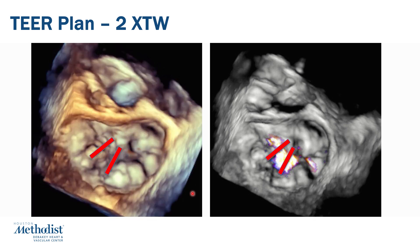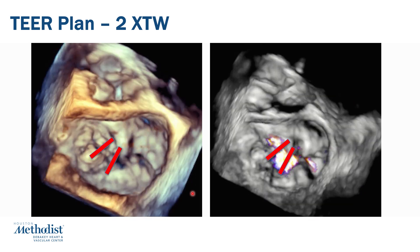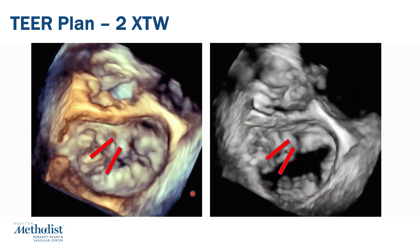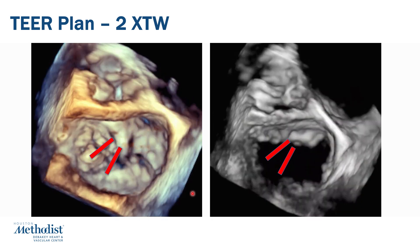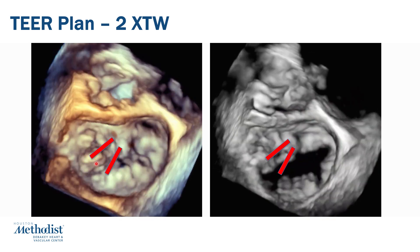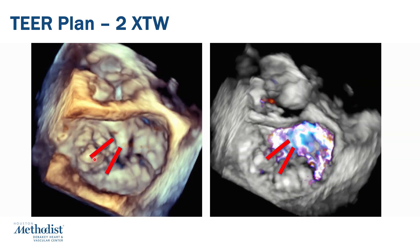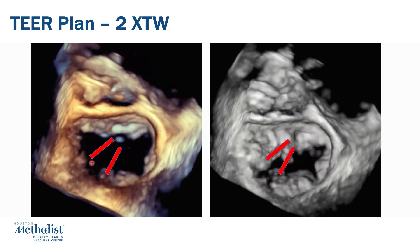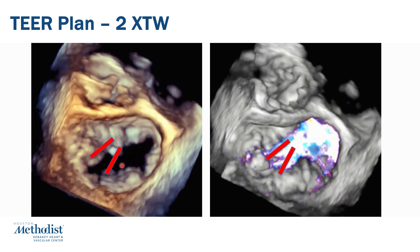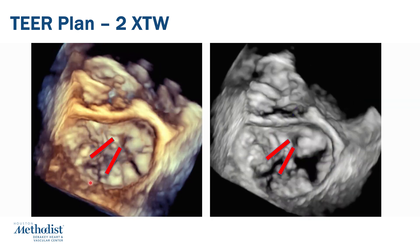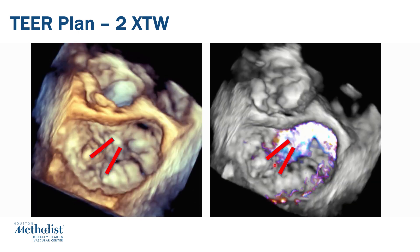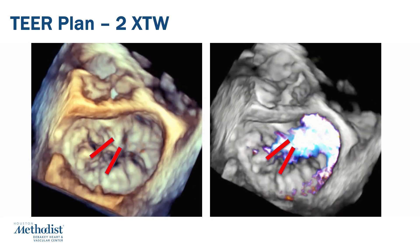This patient was felt to be a high surgical risk candidate at our center, and our plan was to consider edge-to-edge repair. Based on careful discussion with our imaging team, we felt we could position two clips — one from the P1 scallop of the posterior leaflet to the A2, perpendicular to the line of coaptation, and a second clip medial to that, from the A2 to the P2 scallop region. This is the corresponding color 3D representation of our clipping plan.